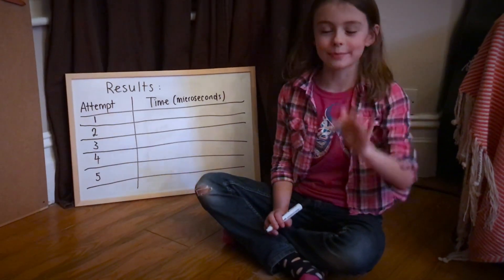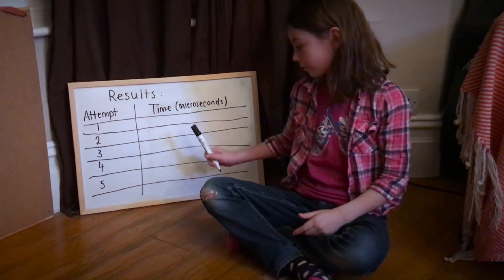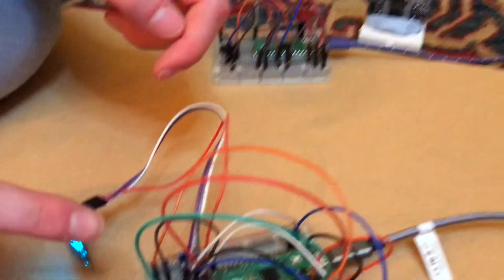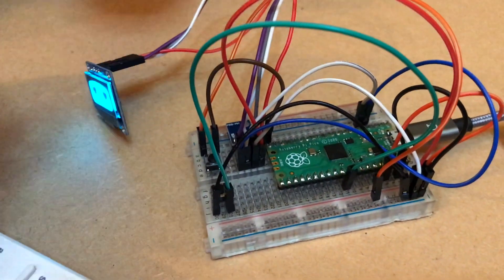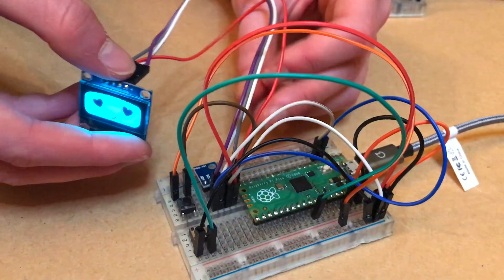We're going to do it 5 times and record the results on the table. This device measures temperature and air pressure. I'm measuring this because it affects the speed of sound.